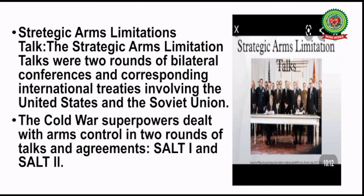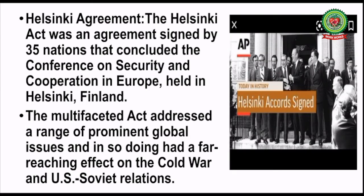The next term is 'Strategic Arms Limitation Talks' (SALT). These were two rounds of bilateral conferences and corresponding international treaties involving the United States and the Soviet Union. The Cold War superpowers dealt with arms control in two rounds of talks — SALT I and SALT II. By signing these agreements, both USA and USSR agreed that they would decrease the production of deadly weapons.